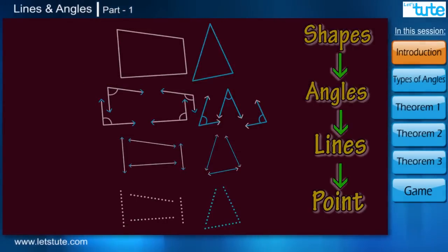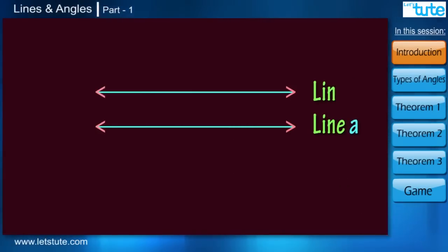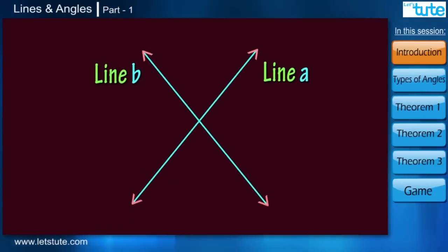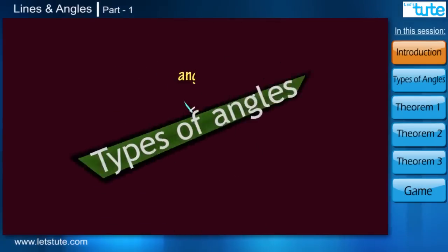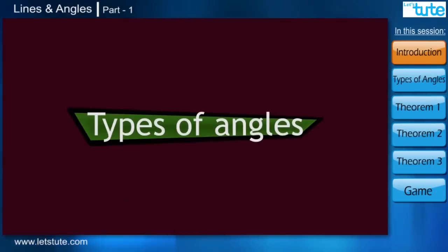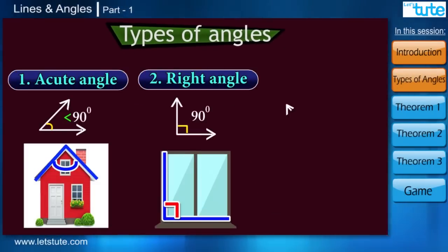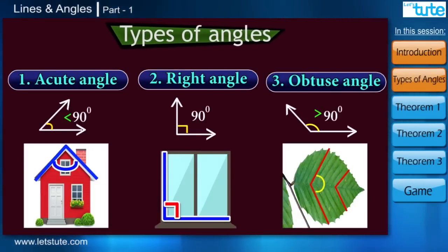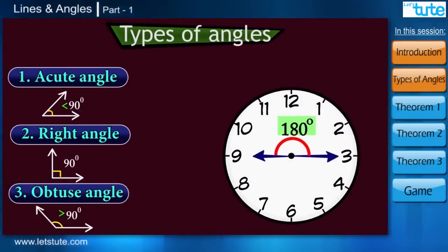We know what a line is. And when two such lines intersect each other, angles are formed. We have a few basic types of angles like acute angle, right angle, and obtuse angle. Even when we have a straight line, it forms an angle of 180 degrees.